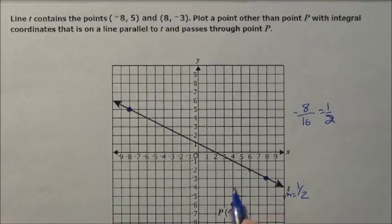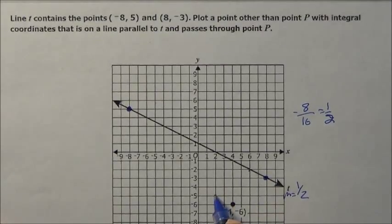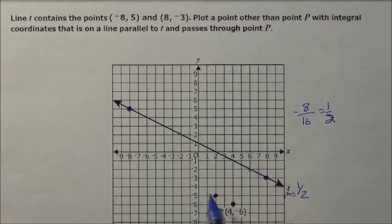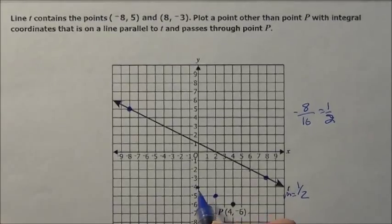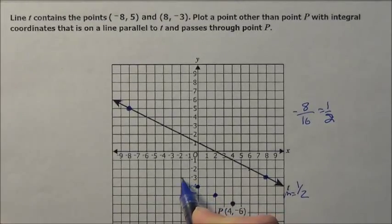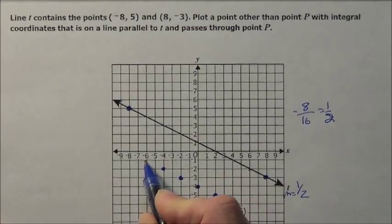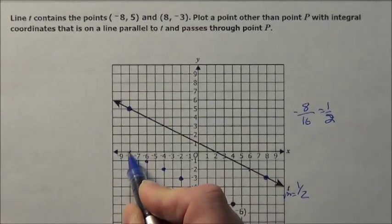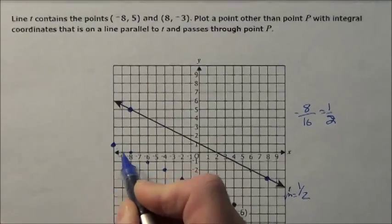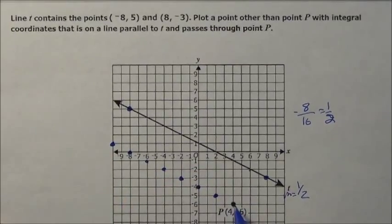Well, I just got to follow the same thing, go up 1 over 2. Boom! There's a point. I could go up 1 over 2. There's another point. Up 1 over 2. Up 1 over 2. Any of these that I'm doing would be solutions that you would be allowed to put.